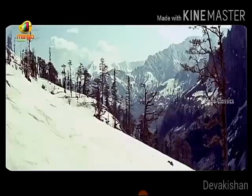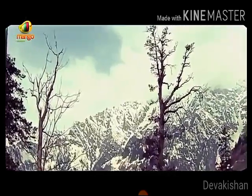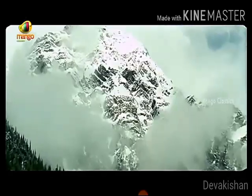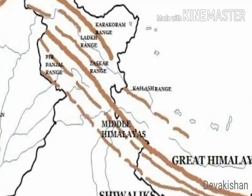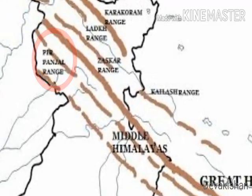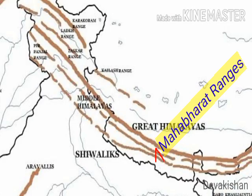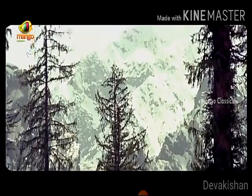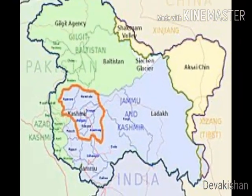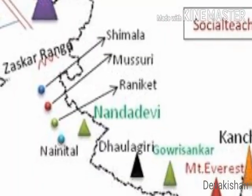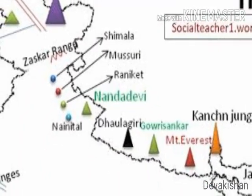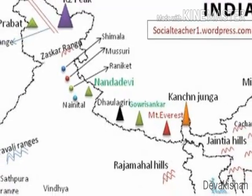The Lesser Himalayas, or Himachal, have heights ranging from 3,700 m to 4,500 m and are found to the south of the Greater Himalayas. This range has the most rugged relief and is mainly composed of highly compressed rocks. The important ranges here are the Pirpanjal and Mahabharata ranges. It consists of the famous valleys of Kashmir, Kangra, and Kulu in Himachal Pradesh, and is well known for hill stations like Shimla, Mussoorie, Nainital, and Ranikhet, covered by evergreen forests.